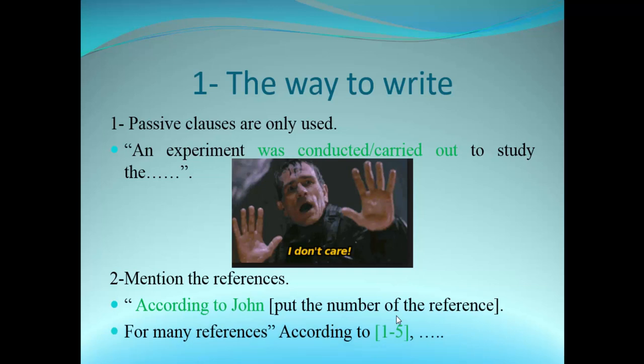For multiple references, you can write 'according to [1–5].' In the reference section, you will find the names and titles of those papers.